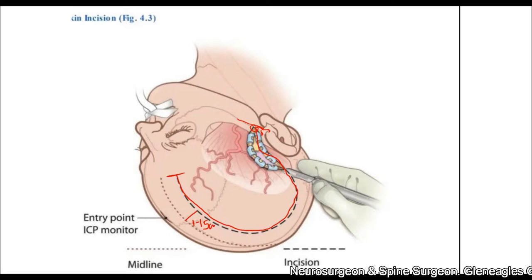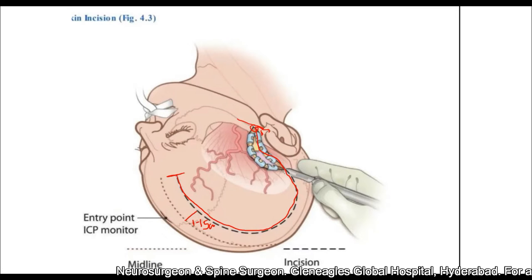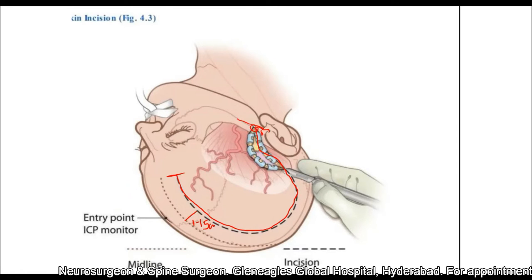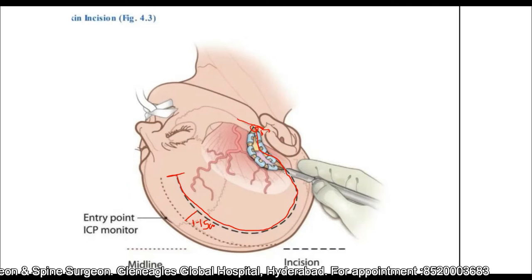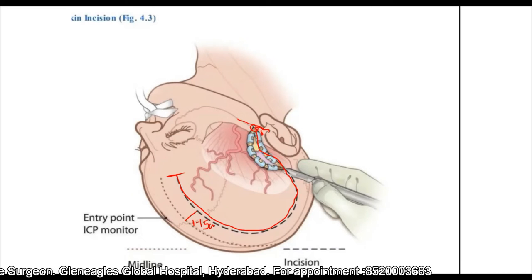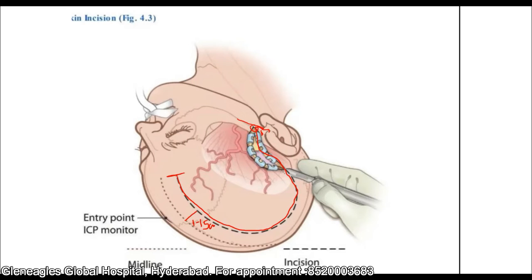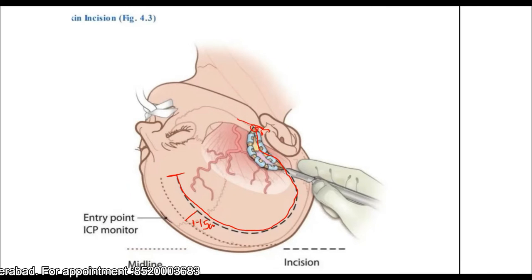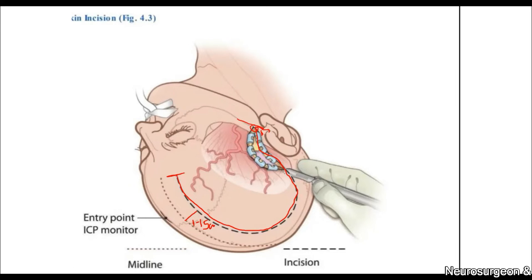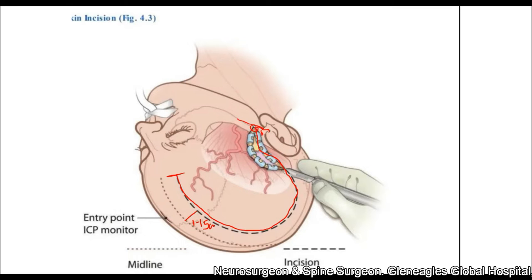In cases of ischemic stroke, the decompression area should be tailored to the margins of the infarcted area, allowing only the devitalized brain to bulge through the defect. If there is extensive edema, we tailor the incision in such a way that the extent of edema is also included.